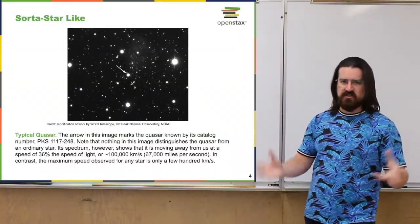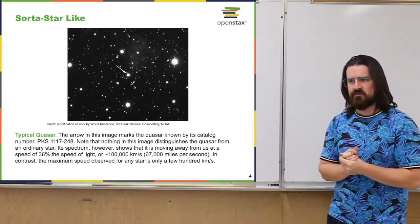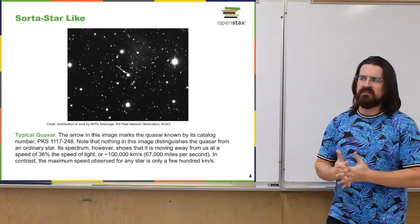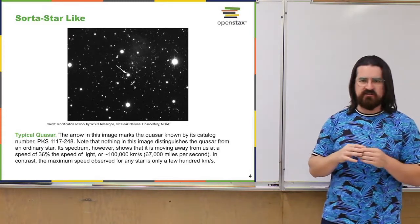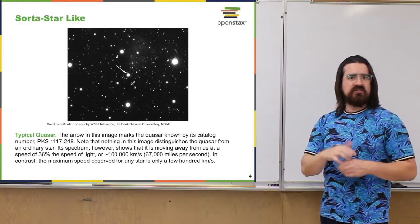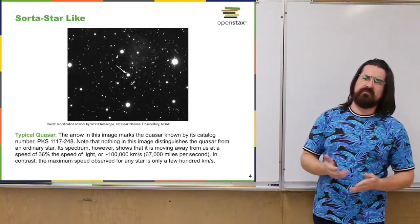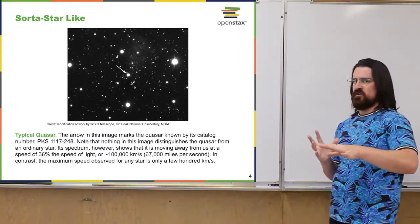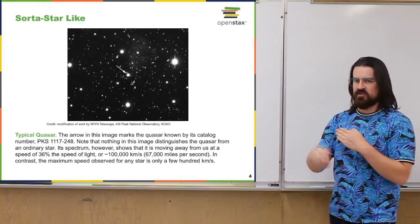We talked about galaxies broadly, and when we were talking about the Milky Way, I told you we've discovered a very, very big black hole in the center of the Milky Way — something like millions of times the mass of our sun. It also seems like these supermassive black holes exist in the center of pretty much every galaxy. But early on, when we were still learning there were other galaxies, we didn't know about that. Hubble was doing his stuff in like the 1920s, and black holes were still theoretical things.